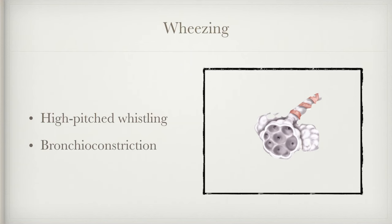Wheezing is more of a high-pitched sound. Whenever you hear wheezing, you think bronchial constriction. The bronchioles are the small passages that lead to the alveoli, and each has a smooth muscle wrapped around it. When these muscles constrict or tighten, the bronchioles become a smaller passage and air can't get through — and that comes out as wheezing. You can imagine breathing through a stir straw. Very common with asthma, COPD, sometimes with pneumonia, and also bronchitis.